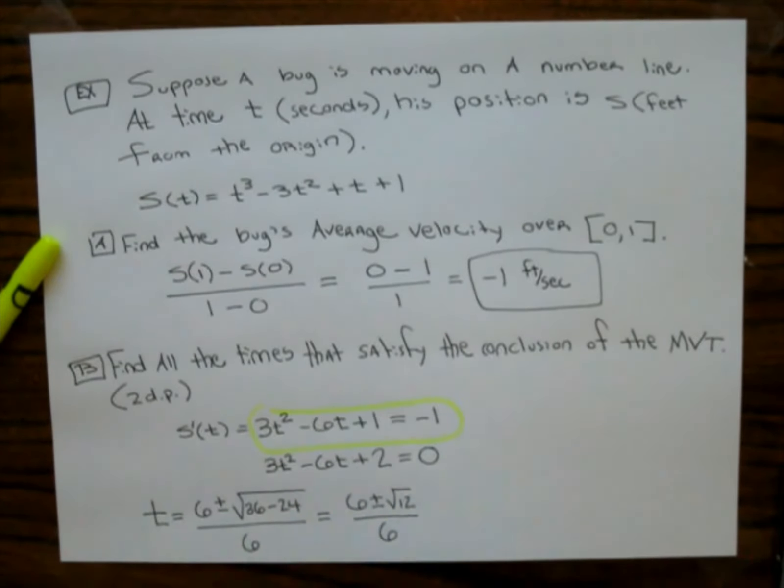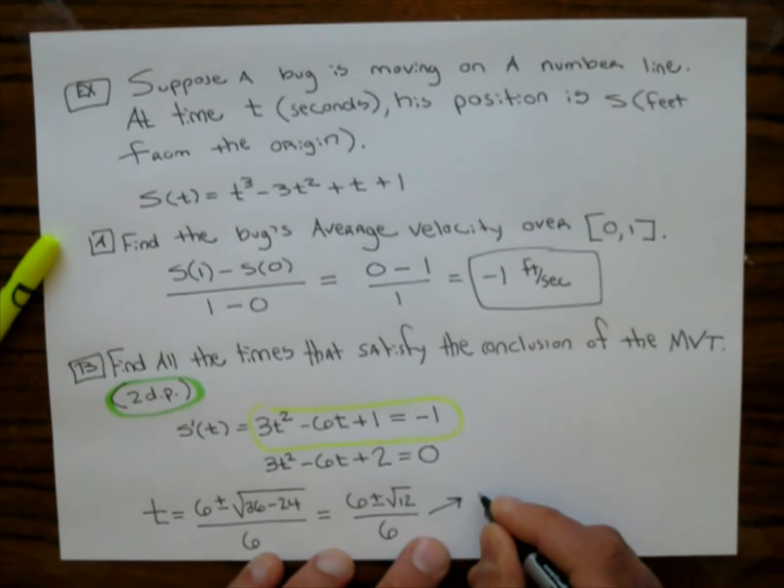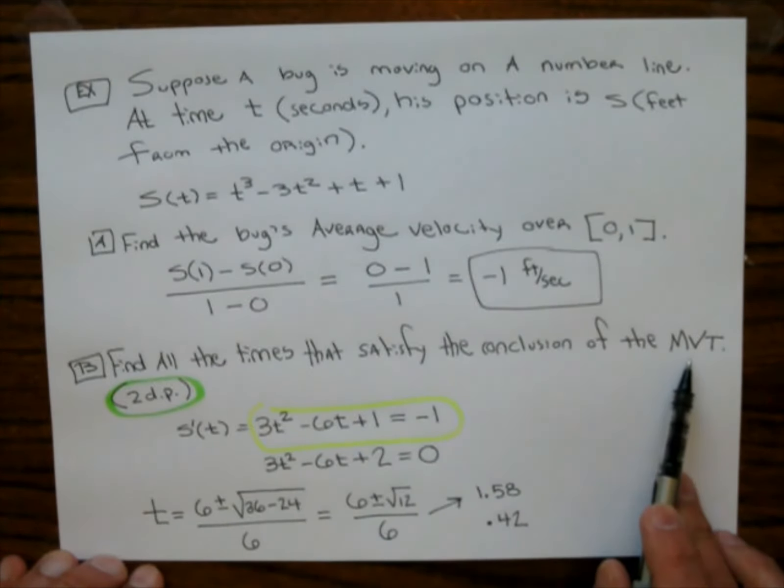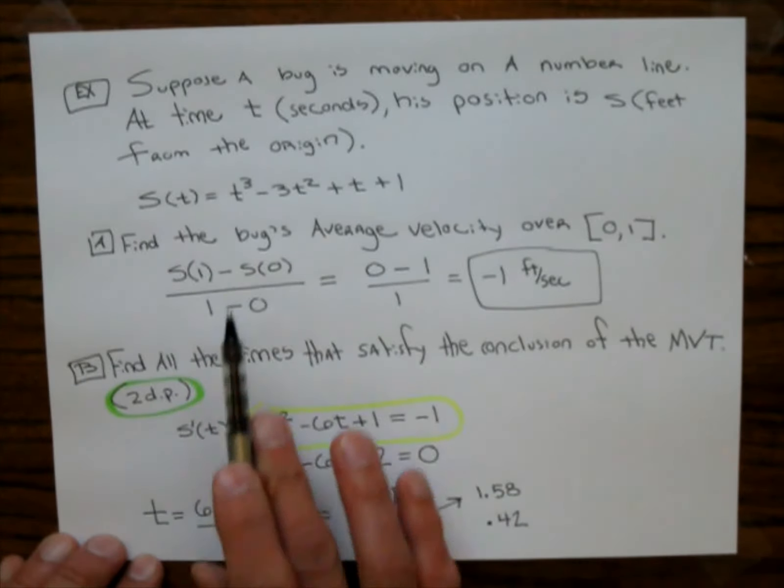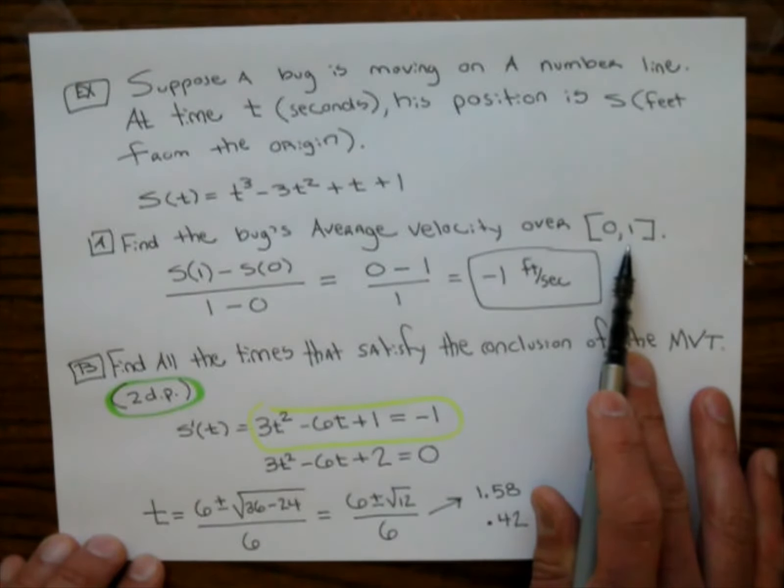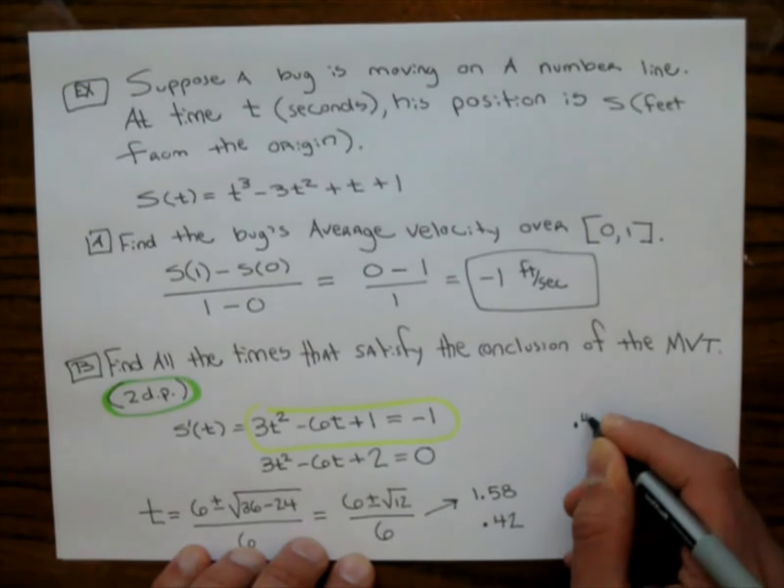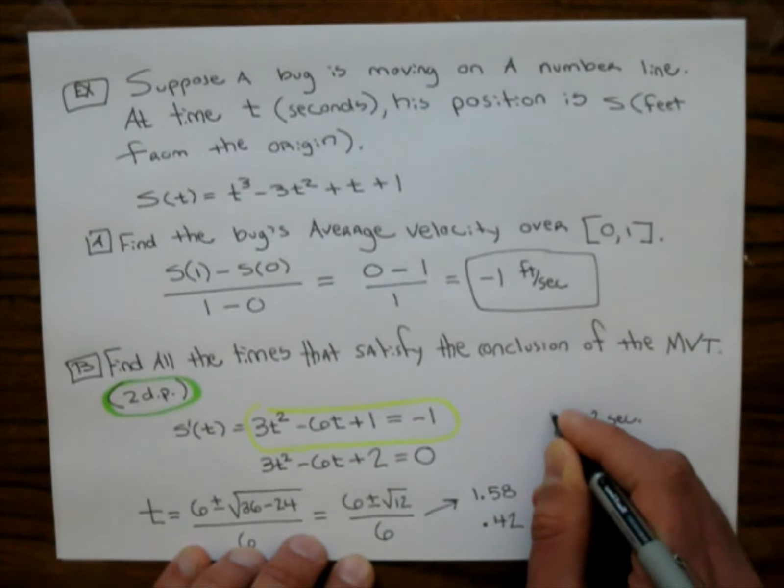So this is going to be 6 plus or minus the square root of 12 over 6. Now, notice what it says here. This is great. We can just round to two decimal places. So this is going to kick out two numbers. And when I did that on my calculator, and I'm rounding to two decimal places, I got 1.58 and the other one's 0.42. Find all times that satisfy the conclusion of the mean value theorem. Which means is there a time in our interval that we have here? And there should be, because this function is continuous and differentiable everywhere, really, and in this interval as well. So which time is in that interval? It would be the time 0.42 seconds.